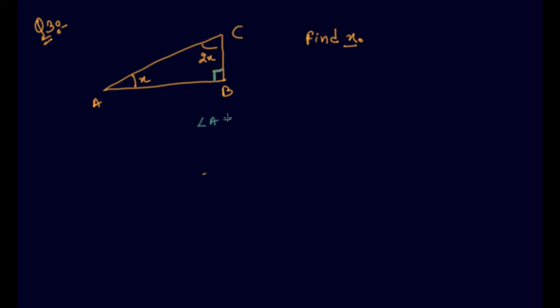I will write angle a plus angle b plus angle c would be 180 degrees by using angle sum property. Angle a is x degrees, angle b is 90 degrees, angle c is 2x degrees. This is 180.